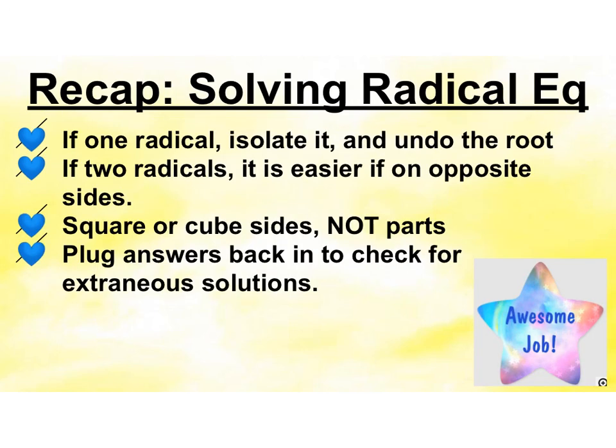To recap: if you have one radical, isolate it and undo the root. If you have two radicals, it's easier if they're on opposite sides — square or cube sides, not the parts. Plug your answers back in to check your work. Nice job.